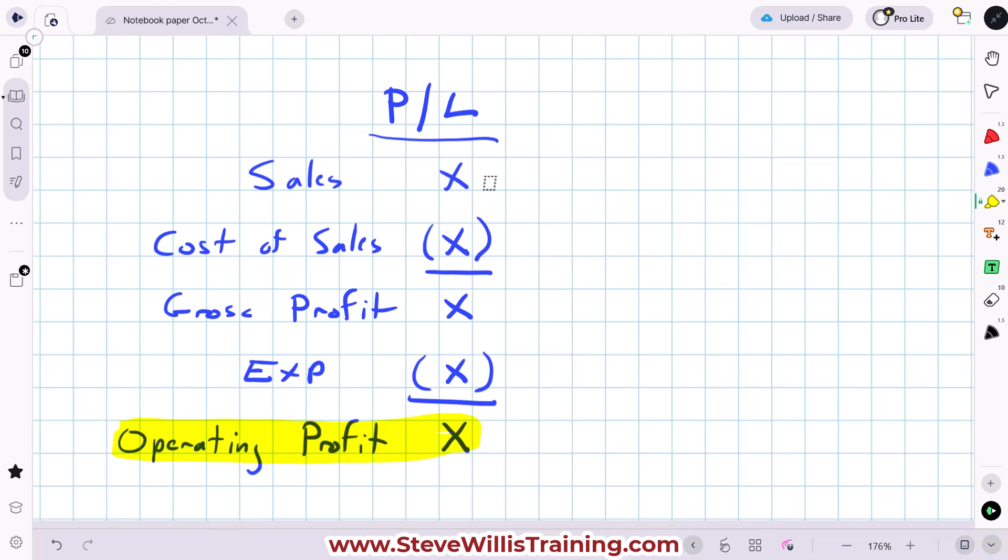This is the profit we earn before distributing any of that to our lenders via interest or the tax authorities via tax or to our shareholders via dividends. So guys, operating profit is there, divided by capital employed,